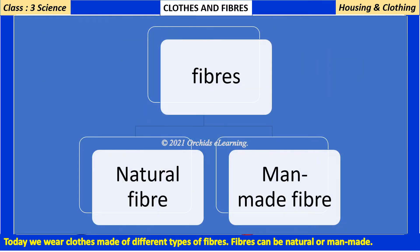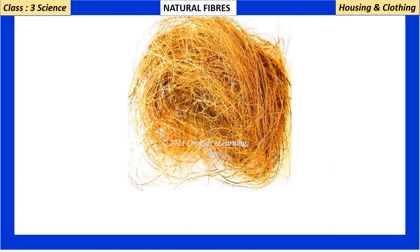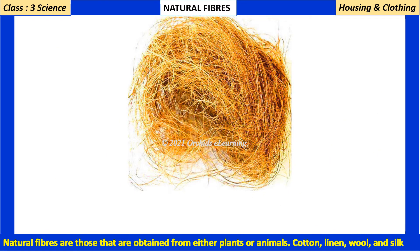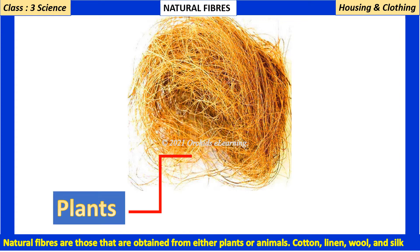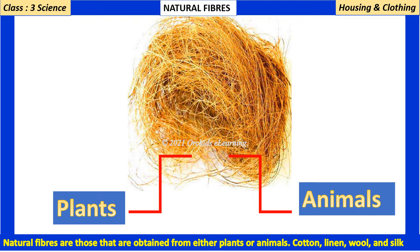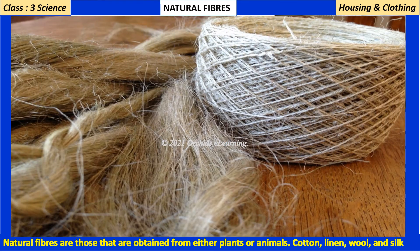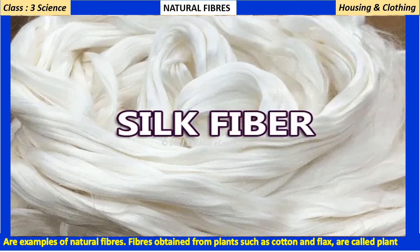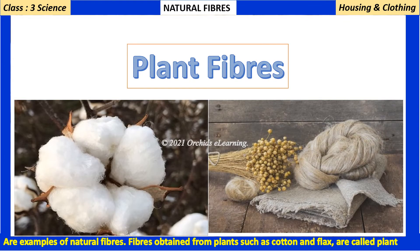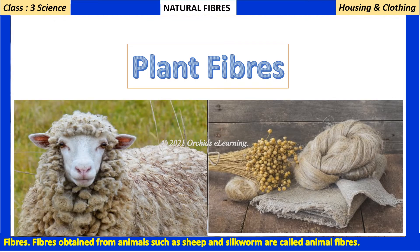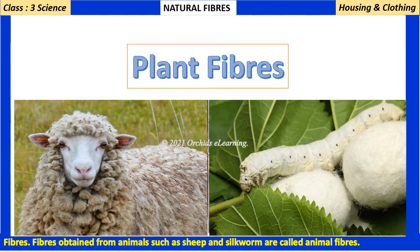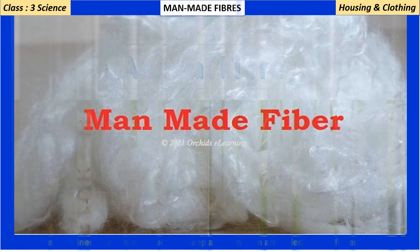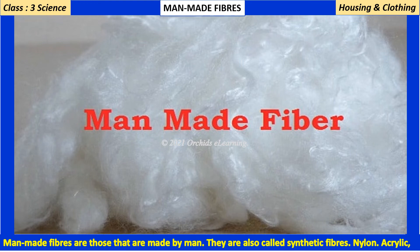Fibers can be natural or man-made. Natural fibers are those obtained from either plants or animals. Cotton, linen, wool, and silk are examples of natural fibers. Fibers obtained from plants such as cotton and flax are called plant fibers. Fibers obtained from animals such as sheep and silkworm are called animal fibers.